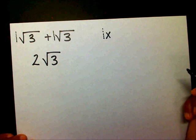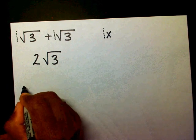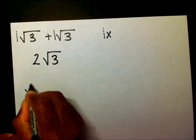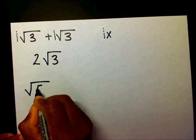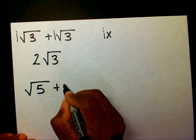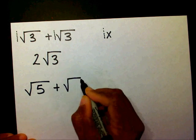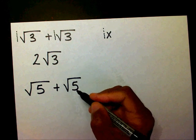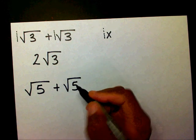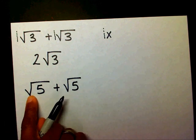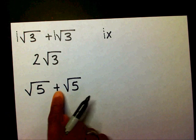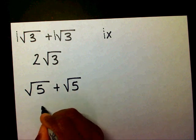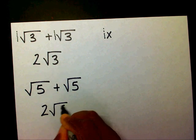If I gave you radical five plus radical five, then I have one radical five plus one radical five, which will give me two radical five.